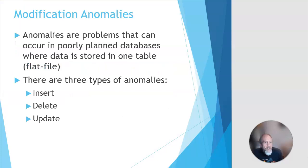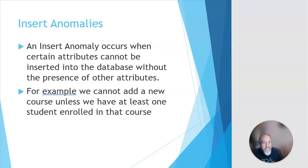Why do we do normalization? Here's something that can occur in databases: anomalies. When a database is not done well, you end up with three types of anomalies — insertion, deletion, and update anomalies. With an insertion anomaly, you need other data to insert a record into the table. In a previous example, we had a table that combined students and courses, so you couldn't insert a course unless you already had a student enrolled. That's not a good design.